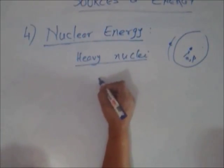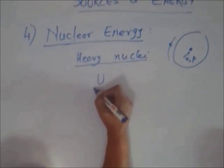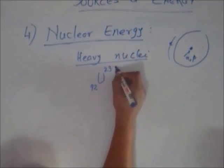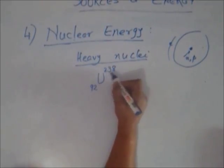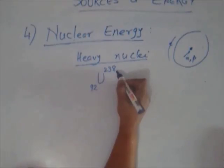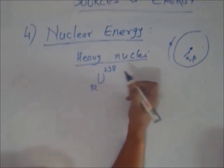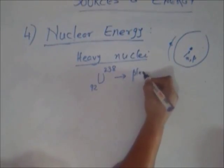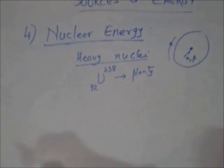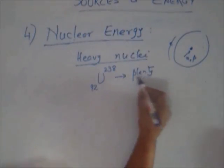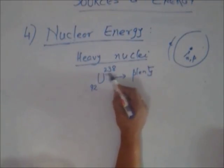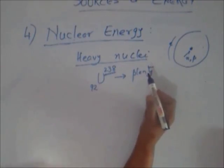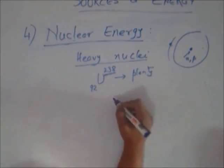Heavy nuclei means they have a large number of neutrons and protons together. Uranium has atomic number 92 and has various isotopes: 235, 238, 239. Some are stable, some are plentiful. India has a supply of it. A heavy nucleus is heavy because its atomic mass is large.